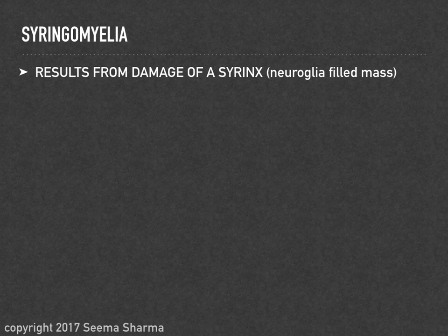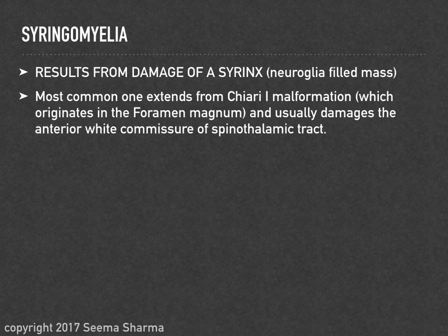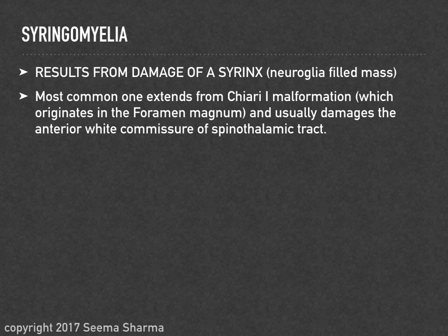Syringomyelia results from damage by a syrinx. The classic presentation is loss of pain and temperature in a cape-like distribution. The most common cause is Chiari type 1 malformation, which protrudes downward through the foramen magnum and damages the anterior white commissure of the spinothalamic tract, which relays pain and temperature information to the brain.